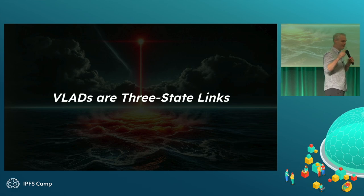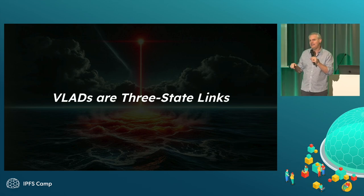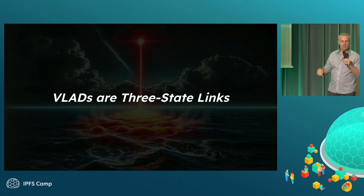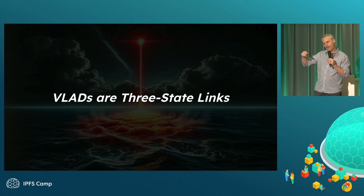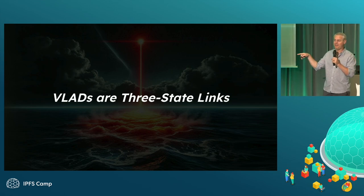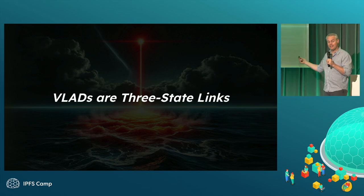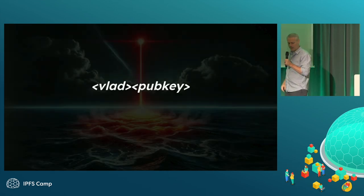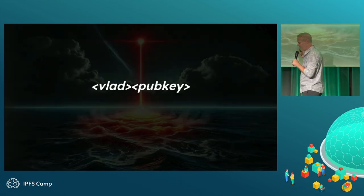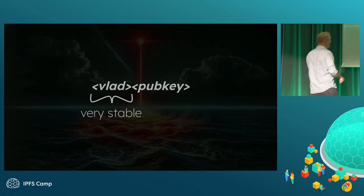VLADs are three-state links, just like URLs: valid, invalid, or partially valid. A VLAD isn't all there is — it's a VLAD and a public key, because you're typically encrypting something to a public key. The public key part might be invalid, but the VLAD part never changes, and you can use it to get the provenance log and update the pub-key part. The identifiers we use are just a concatenated, multi-hash encoded VLAD and a pub key — the very stable part.